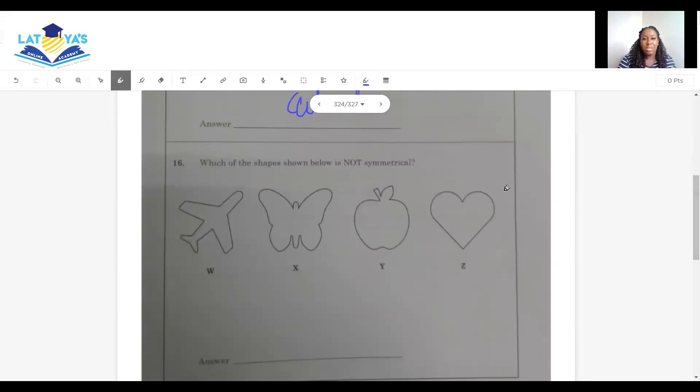Which of the shapes shown below is not symmetrical? Definitely this is symmetrical. I mean, look at the butterfly. We can go straight through there, can't we? Look at the plane. We can go straight through there. But the apple, is this shape symmetrical? No, it isn't. So it will be the apple. This shape is not symmetrical. So the answer is the apple.